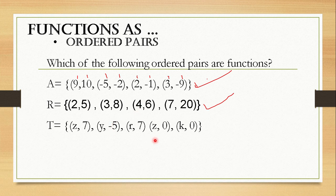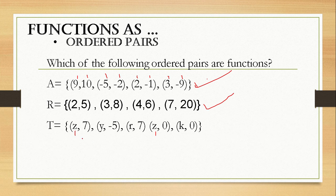How about this example? Do you think it is a function? No, it is not a function. Let us look at the example carefully. As you can see there, we have a repetition of input which is z. Take note that a relation which is 1-to-many is not a function, because basing from our definition, one input should have exactly one output. Our input z has two outputs which are 7 and 0. Therefore, this is not a function. And that's how easy it is to determine function as ordered pairs.